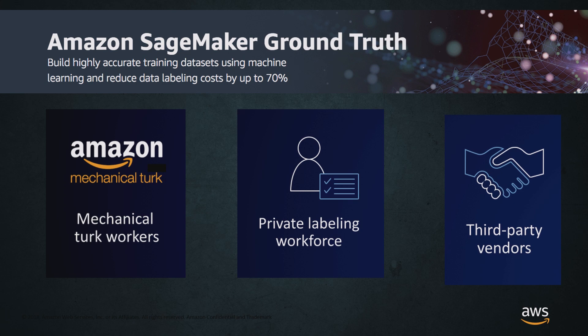Amazon SageMaker Ground Truth is a managed data labeling solution that can help you save money by reducing labeling costs by up to 70%. There are three ways you can use data labeling on Ground Truth. The first is with Mechanical Turk workers — for non-sensitive data, you can crowdsource the labeling for your data objects. You can also set up a labeling solution using SMEs from your own company with a private labeling workforce. And you can also go with third-party vendors.